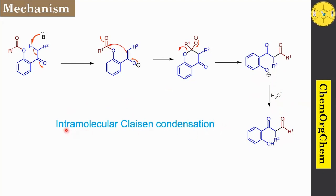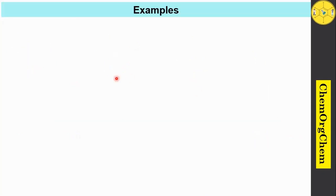This rearrangement reaction is somewhat different from the Dieckmann cyclization or Dieckmann condensation reaction. The Dieckmann cyclization produces a β-ketoester, while the Baker-Venkataraman rearrangement produces a β-diketone compound. Let's see some examples based on the Baker-Venkataraman rearrangement reaction.